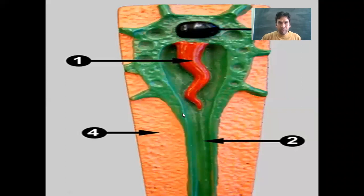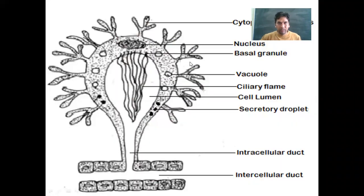These are also flame cells, shown under the flame. The cytoplasm is present on all sides. These are the basal granules, from which the cilia arise. Here are the excretory globules and the ciliary flame. The duct here is the capillary duct.